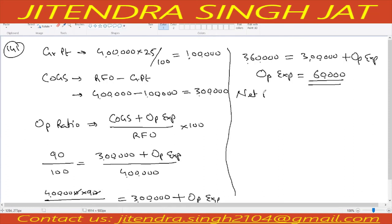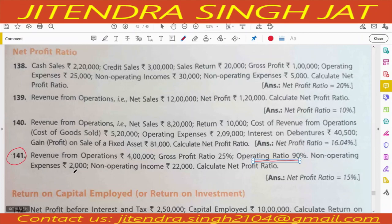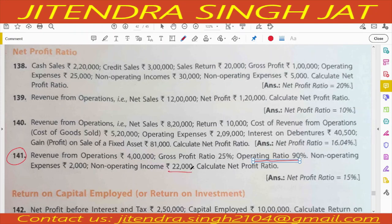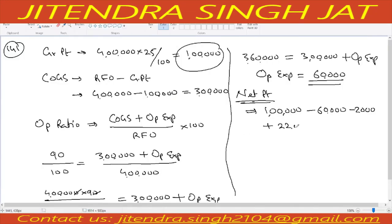Now we can calculate net profit because gross profit is known. Gross profit is 1 lakh. Minus operating expenses 60,000. Minus non-operating expenses 2,000. Plus non-operating income 22,000. So: 1 lakh minus 60,000 minus 2,000 plus 22,000. Net profit = 60,000. Therefore, net profit ratio = 60,000 divided by revenue from operations 4 lakh, multiplied by 100.